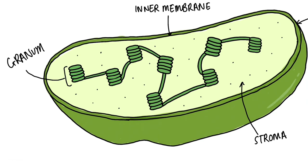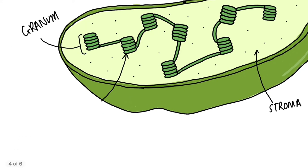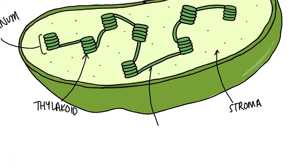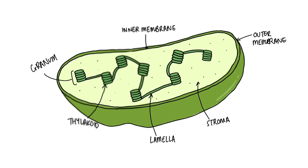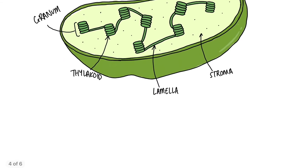So a granum is a whole stack of pancakes. Each individual pancake is called a thylakoid. And the things that connect them are called lamella — so a lamella is singular, lamellae is plural. That's the structure of the chloroplast. We've just seen the overall equation for photosynthesis, and if you're using this video for revision, you probably know already that the actual reactions are a lot more complicated. In actual fact, photosynthesis is divided into two reactions.